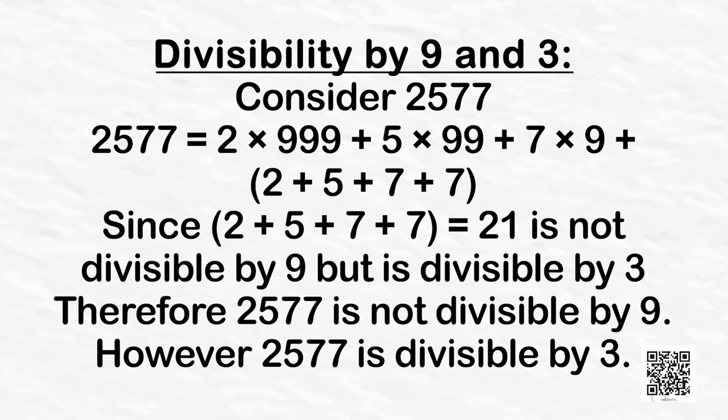Let's check what happens if we consider the number 2577. Using the same steps, 2577 can be written as 2 × 999 + 5 × 99 + 7 × 9 + (2 + 5 + 7 + 7). Since 2 + 5 + 7 + 7 = 21, it is not divisible by 9 but it is divisible by 3. Therefore the number 2577 is not divisible by 9; however, it is divisible by 3.